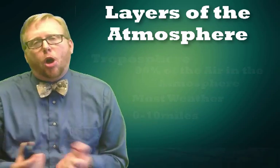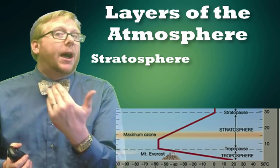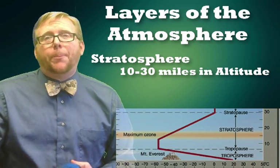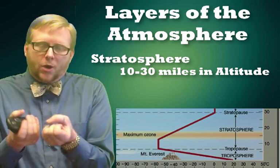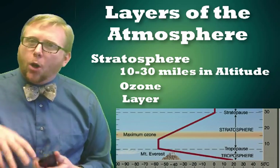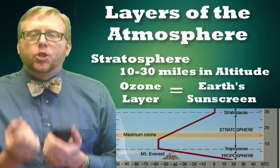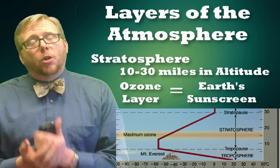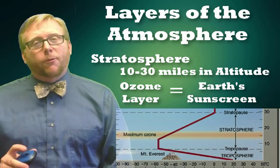Sitting on top of the troposphere is a layer called the stratosphere, which goes from about 16 to 50 kilometers — roughly 30 miles up. On the graph, it's coldest at the bottom and warmer as you go up, almost to the freezing level, because the ozone layer helps trap and warm the Earth. The ozone layer is really important — it helps shelter us from powerful UV rays from the sun, absorbing the UV rays that cause sunburns. It's basically sunscreen for the planet, keeping us from sunburns and preventing UV rays from causing cancer.